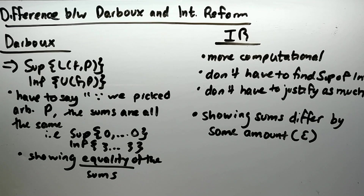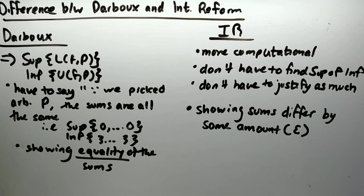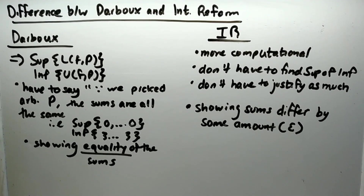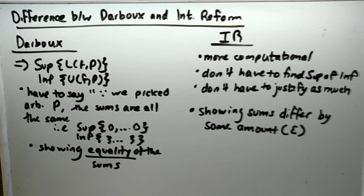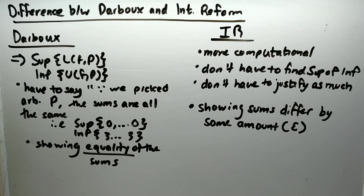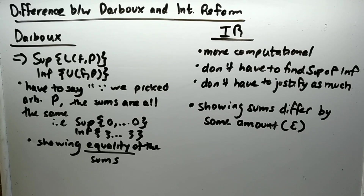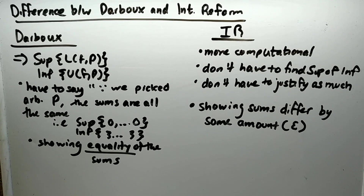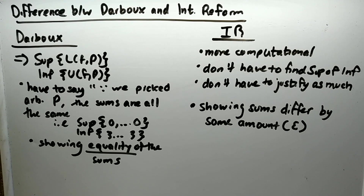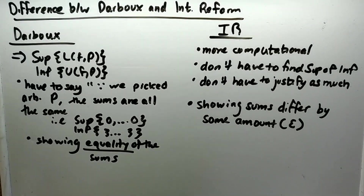In the Darboux definition, we had to find the supremum of all lower sums and the infimum of all upper sums, which required picking an arbitrary partition to show all sums are the same. With the Integrability Reformulation, we just had to pick any upper and lower sum and show they differ by some amount — we just need to declare P is arbitrary at the start. In Darboux, you show the two sums are not equal; in IR, you show they differ by at least epsilon.